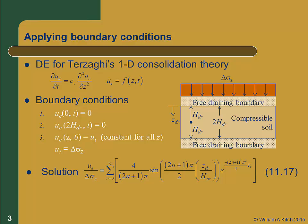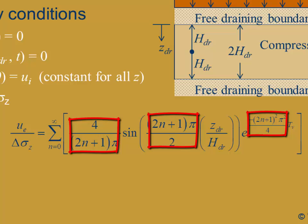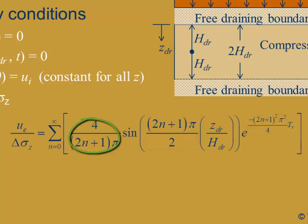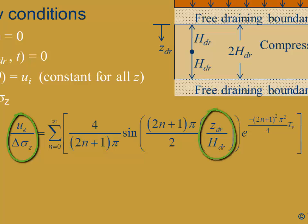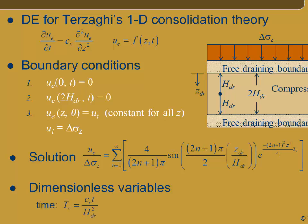This might look a bit complicated at first, but really it's not that bad. It's a series solution and these terms are just counting constants — constants that are a function of n. For example, the first term equals 4 over pi when n is 0, and 4 over 3 pi when n equals 1, etc. The three key variables here are u sub e over delta sigma z, z_dr over h_dr, and t sub v — all three formulated as dimensionless variables. T sub v is called the time factor and is our dimensionless measure of time; it's equal to c sub v times time over h_dr squared. You should check the dimensions of t sub v and satisfy yourself that it is indeed dimensionless.